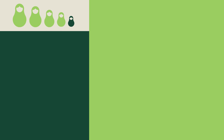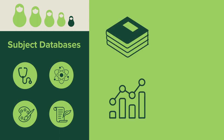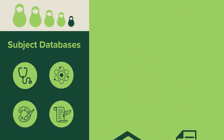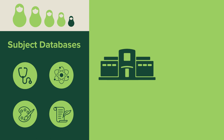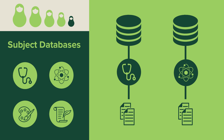That brings us to the smallest and final doll: Subject and Research Databases. The types of resources you may find here are books, data, research articles, or archival materials. Just like you wouldn't go to an outlet store for something that can only be found in small boutique shops, use these databases to find very specific and tailored content that provides quality information for your research.